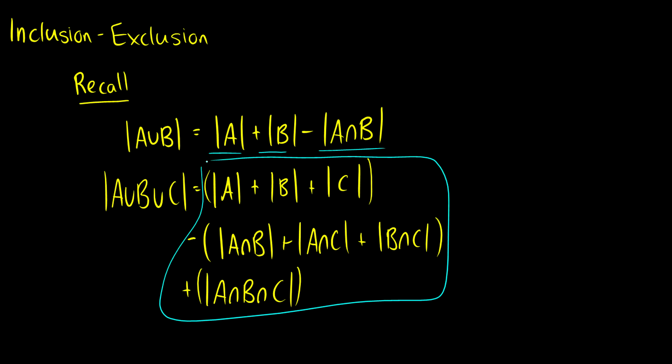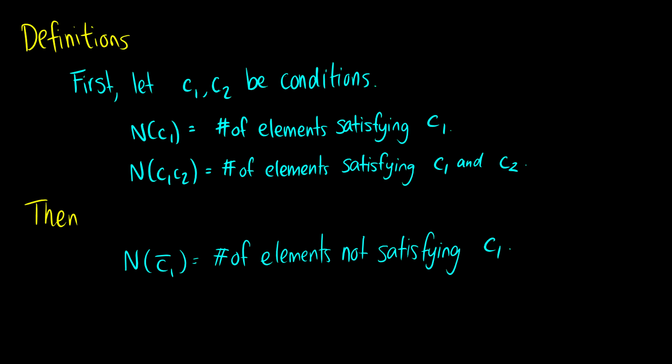We want a system that generalizes even further and doesn't necessarily deal explicitly with sets. So what we have is the principle of inclusion-exclusion, more general. I need to define some stuff because we're not dealing with sets anymore — instead we're dealing with conditions. C1, C2, all the way up to Cn will be conditions. n basically means the number of elements, so n(C1) means the number of elements that satisfy C1.